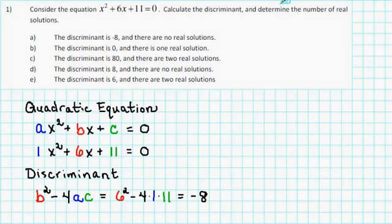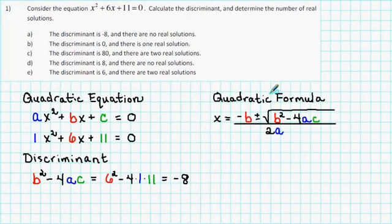The next thing we're asked to do is to determine the number of real solutions to our equation. Well, to solve a quadratic equation, we use the quadratic formula. The quadratic formula says that the solutions to the quadratic equation are given by the formula x is equal to the opposite of b, plus or minus the square root of the discriminant, all divided by 2a. So all we need to do to find the solutions is to substitute in the appropriate values for a, b, and c.